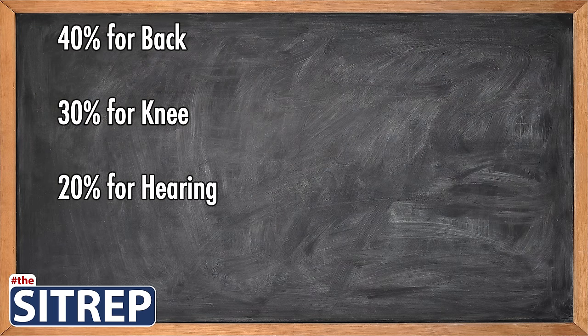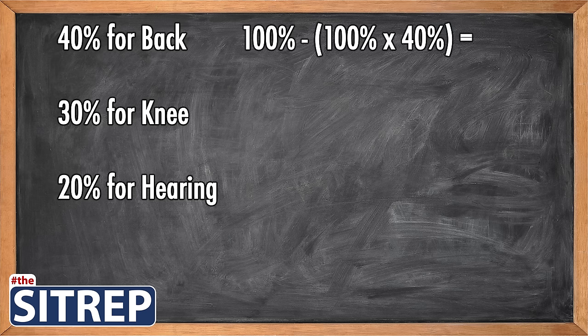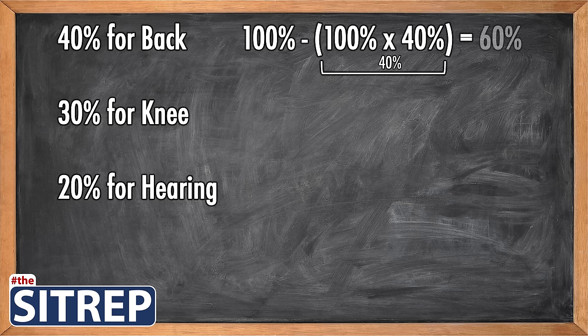The answer isn't really that difficult to figure out. When calculating disability, you want to first begin with the largest and work down to the smallest, as seen on the screen. Starting with the back, we take 100% — the current remainder — and subtract the sum of 100% times 40%. Remembering order of operations, we calculate what is in the parentheses first, which equals 40%. We subtract that from 100% and end up with a remainder of 60%.